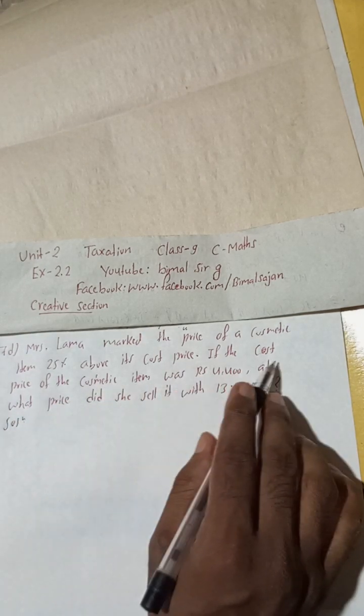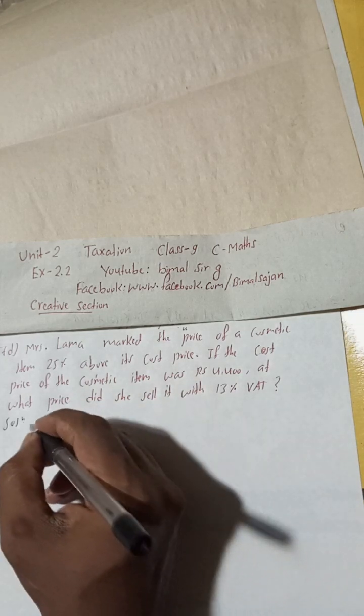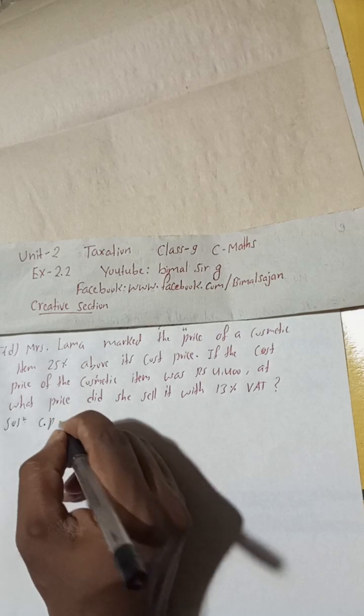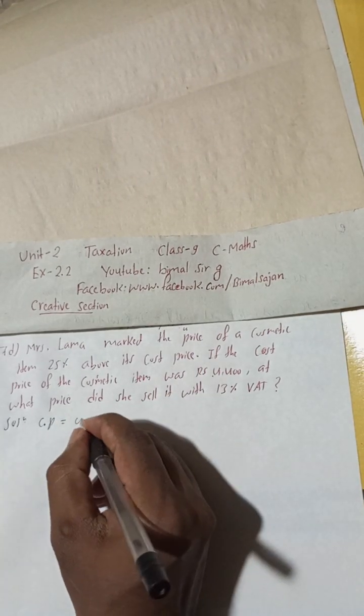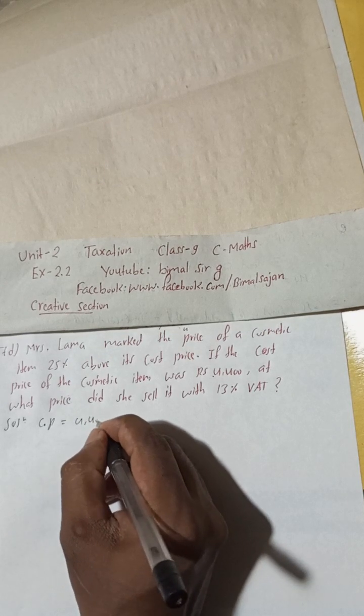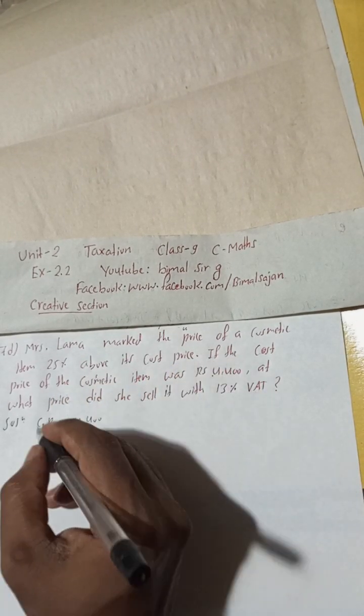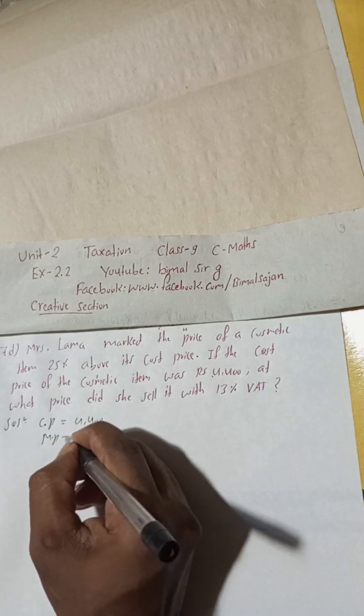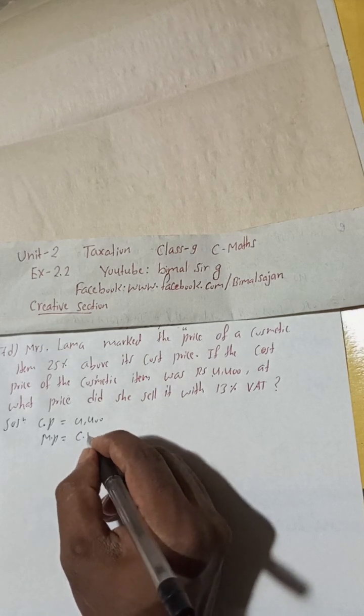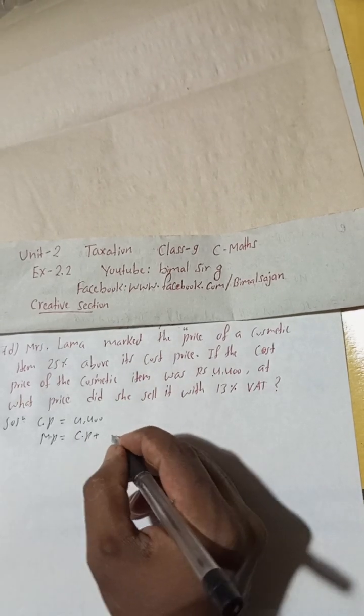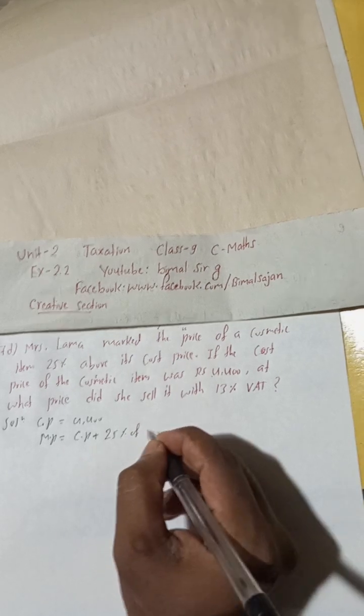Here is given cost price, so now we can write cost price CP is equal to 4400. And now mark price, MP, mark price is 25 percent above, so 25 percent. CP above means plus 25 percent of CP.